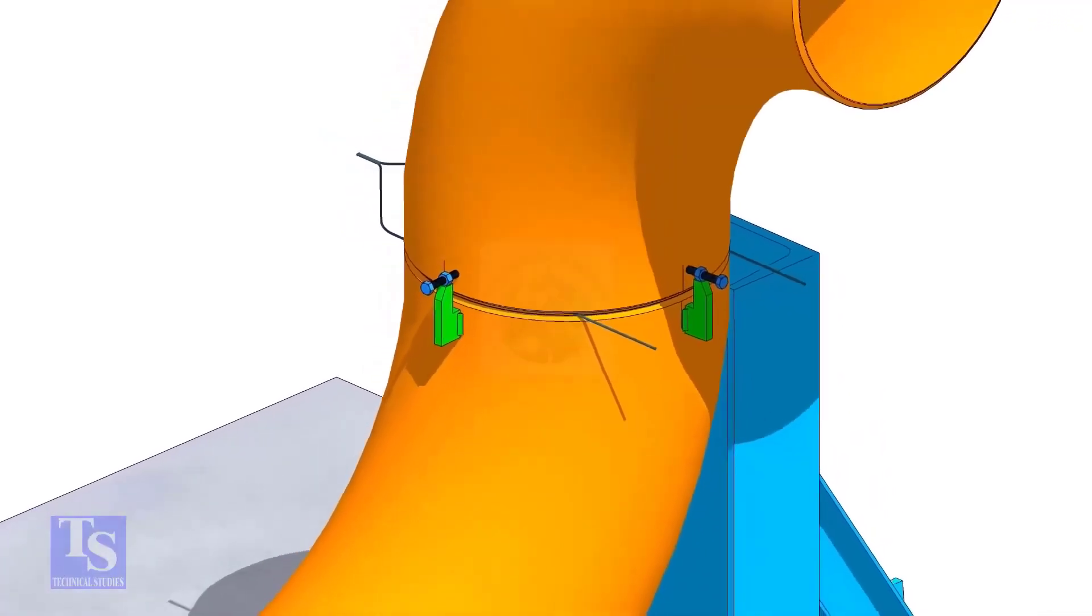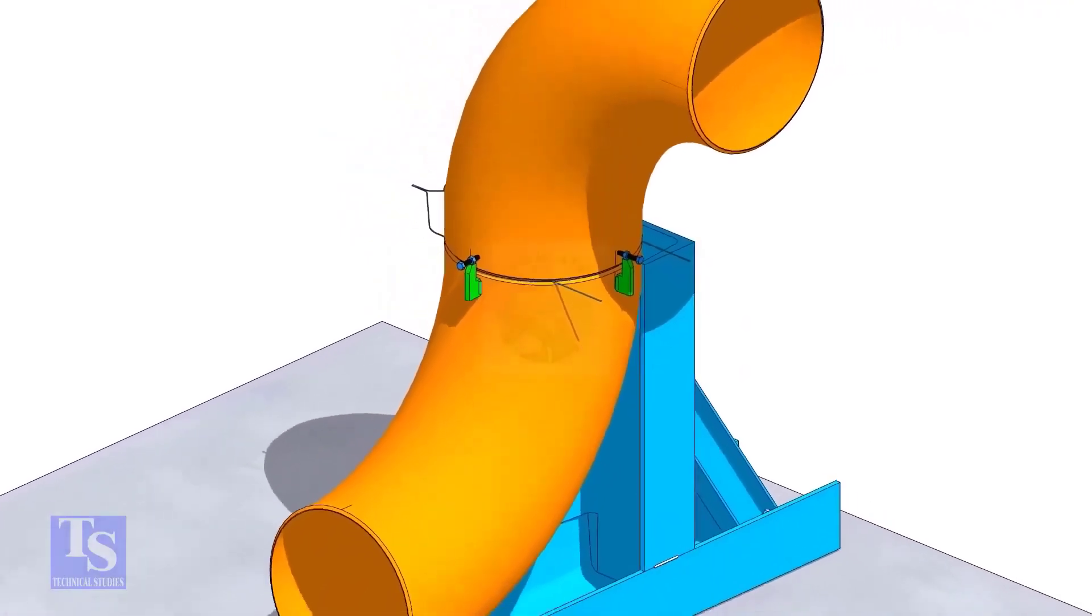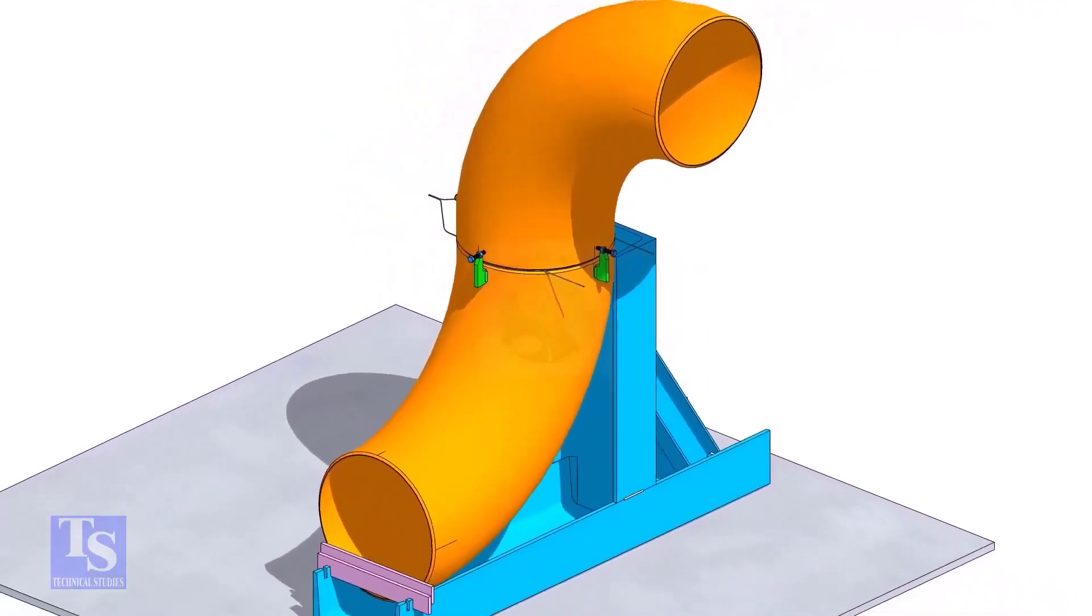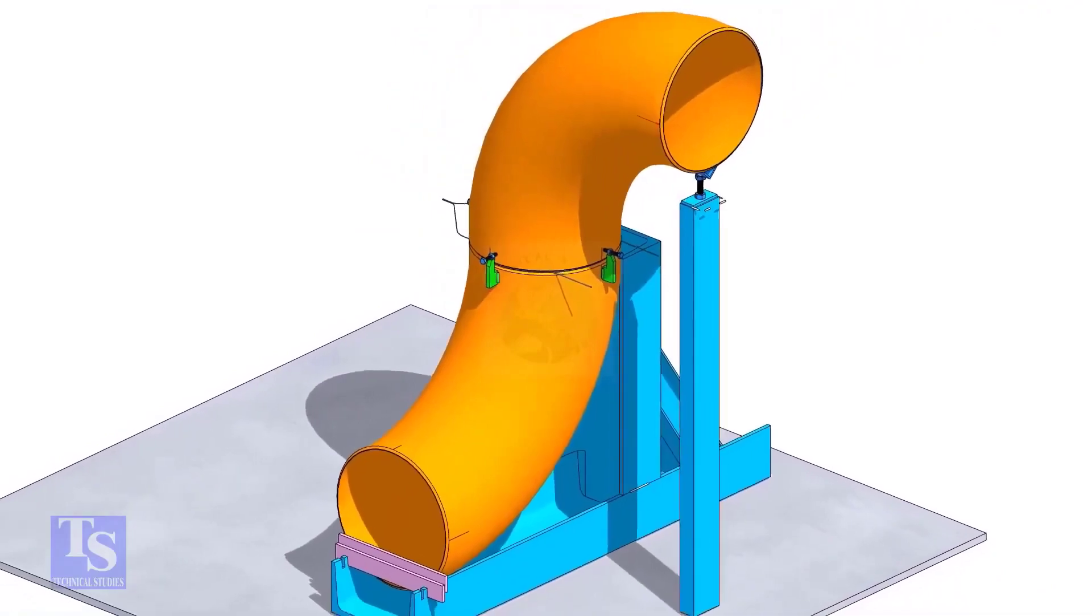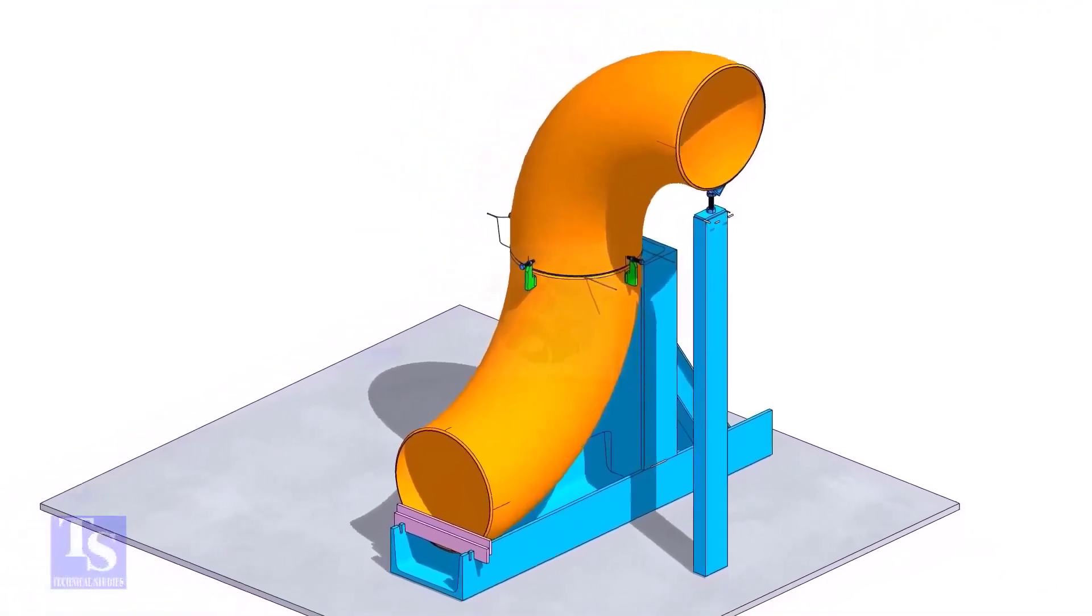Put the other elbow and match the center lines in which direction you want to rotate the elbow. Tack weld an adjustable support below this elbow and adjust the height.